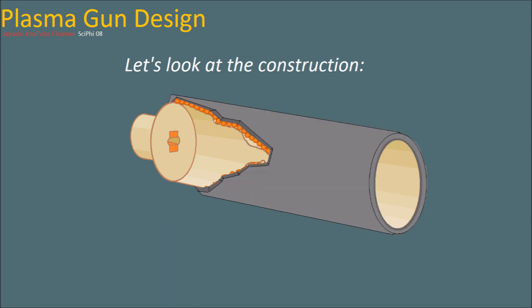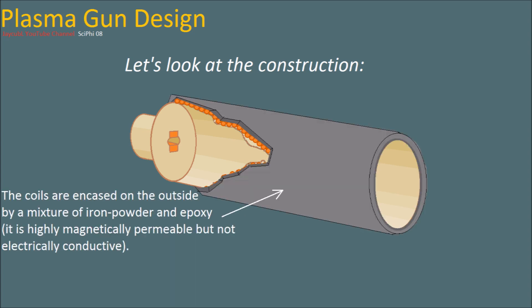Over the top of that, a mixture of iron powder with epoxy is coated over the top of the linear induction motor coils. This is a type of magnetic shielding that's not electrically conductive so it shields the outside from the magnetic field. Most of the magnetic field will be concentrated inside the barrel and it increases the intensity of the magnetic fields inside the barrel while also not absorbing any of the energy of the coils by allowing induced currents to be formed because it's not electrically conductive.